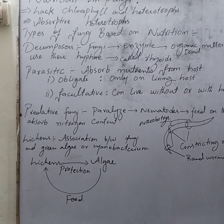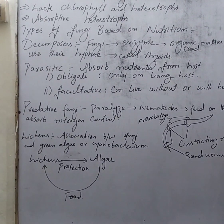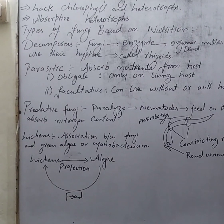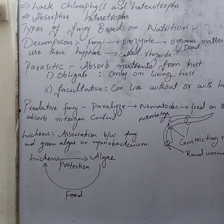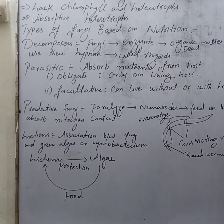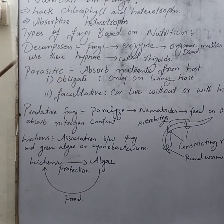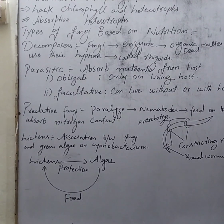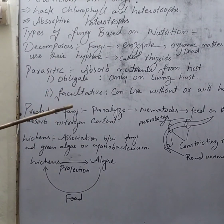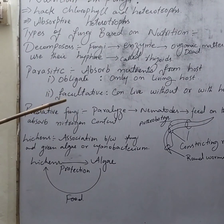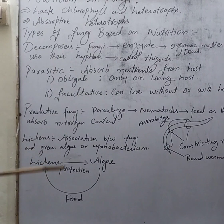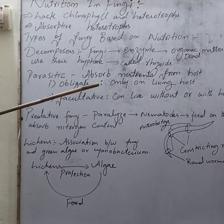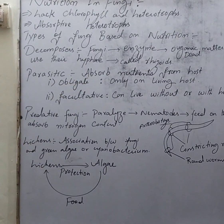Another type is parasitic nutrition, where food is obtained from a living host. They need a host for their own nutrition. There are two types of parasitic fungi: obligate parasites and facultative parasites. Obligate parasites can only live on a living host.